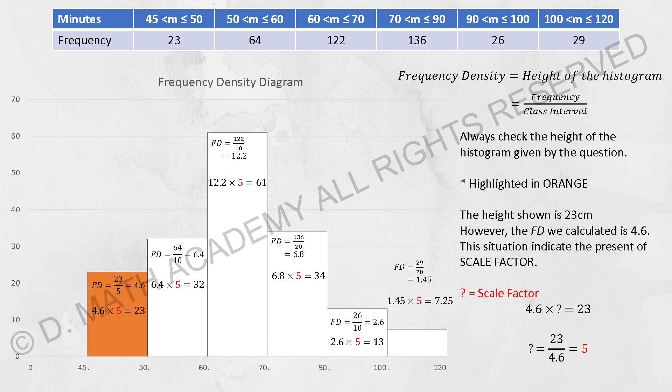So for the next graph here, for the same group of data, they gave you the first one here. The frequency density value is 23. So as usual, you run the calculation first.